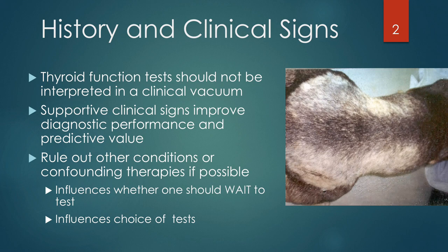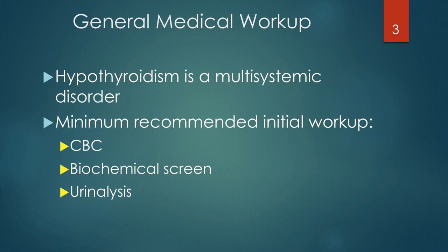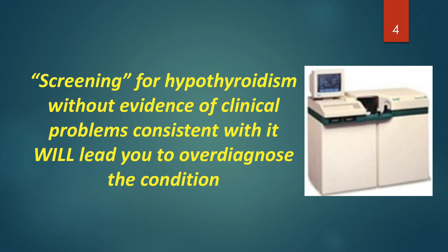The presence or absence of confounding conditions will influence whether you should wait to test or possibly influence the choice of tests. Think of hypothyroidism as a broadly multi-systemic disorder influencing many different organs. So it makes a lot of sense to do a complete workup that includes a complete blood count, biochemical screen, and urinalysis. Screening for hypothyroidism without evidence of clinical problems consistent with it will tend to lead you to over-diagnose the condition.